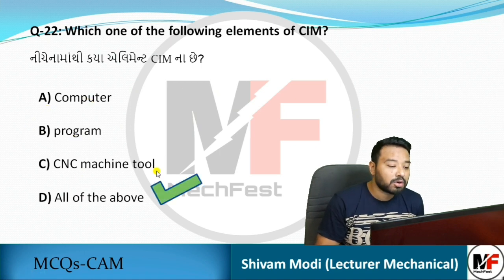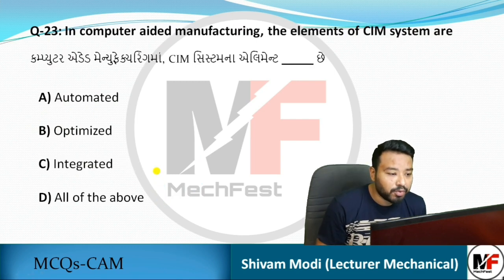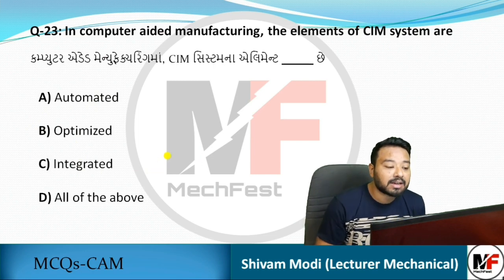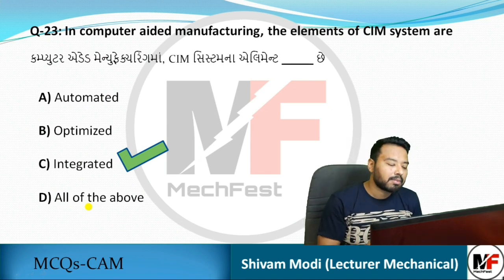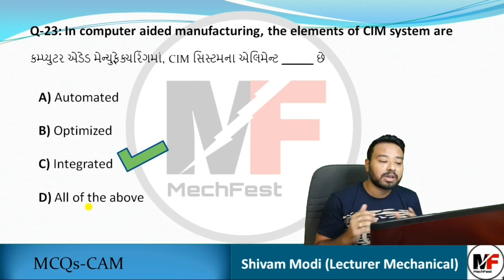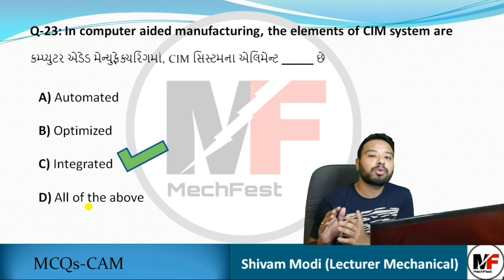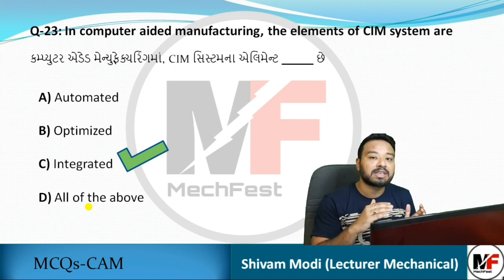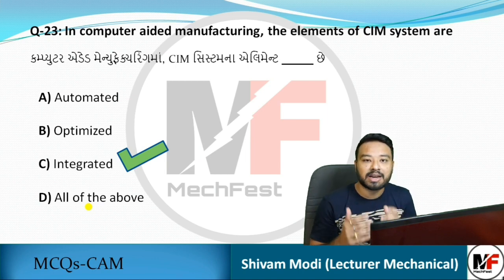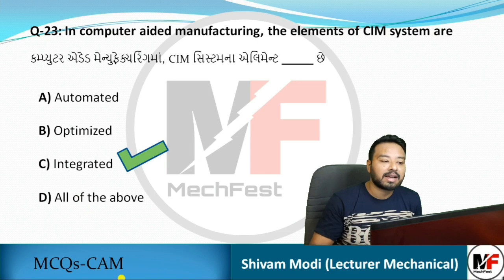Next question: which of the following elements belong to CIM? Options include program computers and CNC machine tools — the answer is all of the above. In CIM, CAD uses software for designing. The design is passed to CAM (Computer Added Manufacturing) where CNC and DNC machines perform manufacturing. Between them is CAPP — Computer Added Process Planning. All are integrated and dependent on each other.